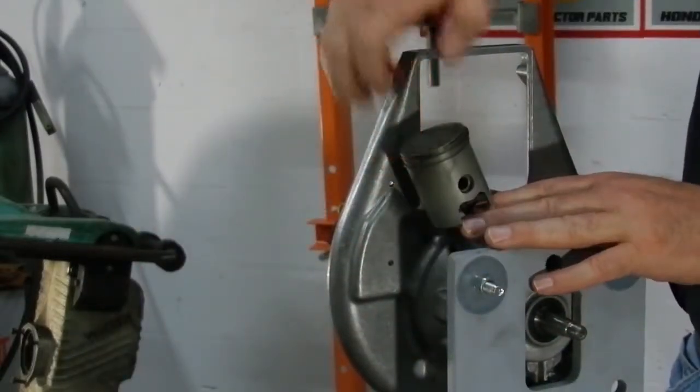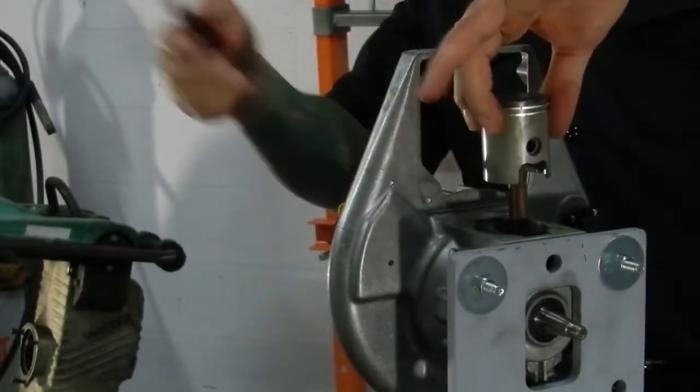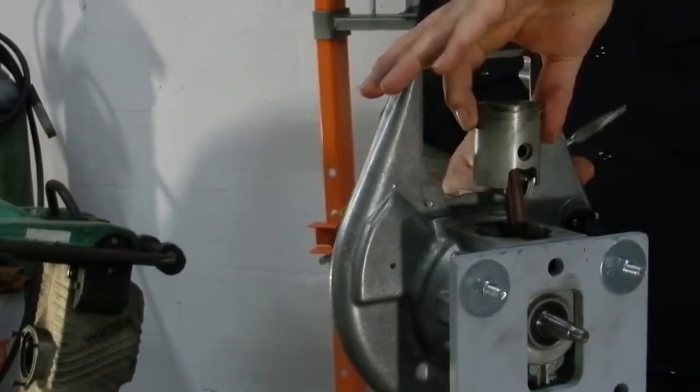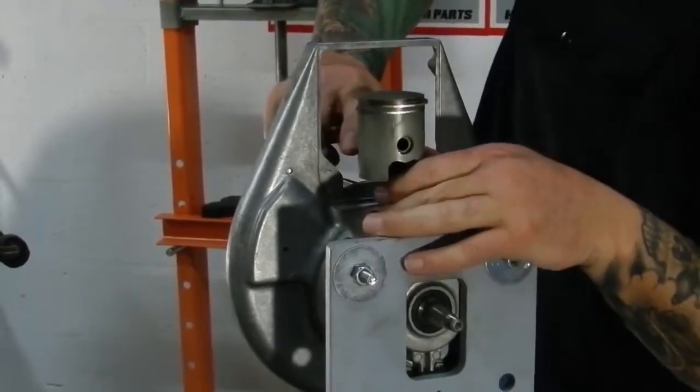Now what we want to do is we want to drive that pin out. This is why we took this other cover off so we have access to the other side. We're going to take our needle nose or you could use a screwdriver or anything else you like and just press through on the other side to drive out that pin.